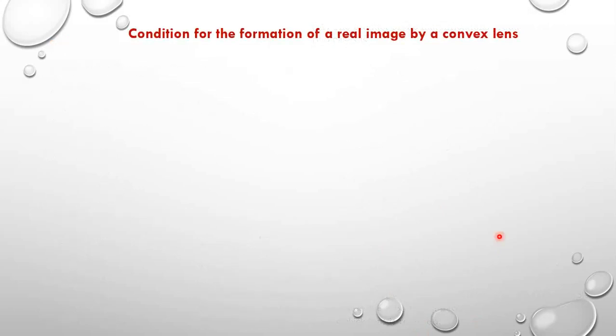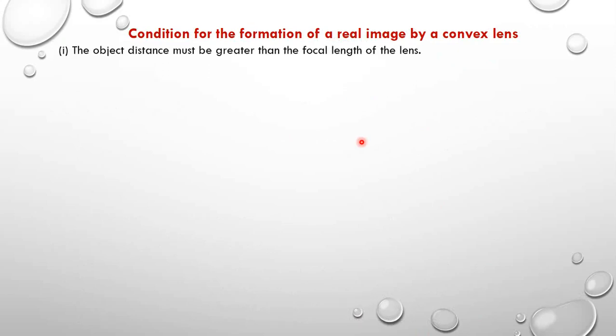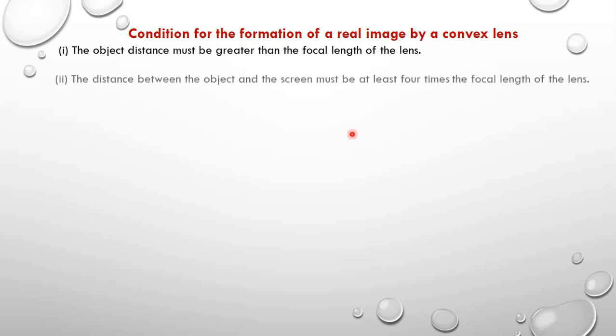Now, the condition for the formation of a real image by a convex lens: the object distance must be greater than the focal length of the lens.